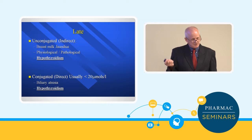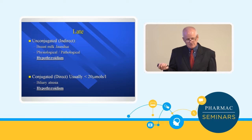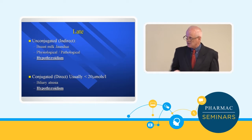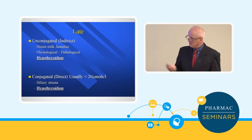The Guthrie card, taken on day three, screens for hypothyroidism by detecting elevated TSH — thyroid stimulating hormone — because the thyroid gland isn't working. However, that only covers primary hypothyroidism. If the hypothalamus or pituitary itself is not working, TSH will be low, so a formal thyroid level in addition to TSH will be needed. Primary hypothyroidism is the most common condition picked up on the Guthrie card — more common than PKU — so don't forget about hypothyroidism with persisting jaundice beyond two weeks.